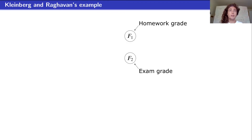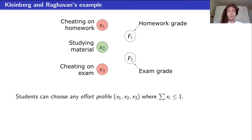To give an example based on Kleinberg and Raghavan's original paper, in this classroom setting we have two features: the professor observes the homework grade and the exam grade of the students, and must combine these into a final grade. There are three actions students can take: we would like them to study the material — that's the admissible action x2 — but they can also cheat on the homework, x1, or cheat on the exam, x3. After reading the course syllabus, the student chooses an effort profile (x1, x2, x3) representing time spent on each action, with one unit of total effort to divide among the three.